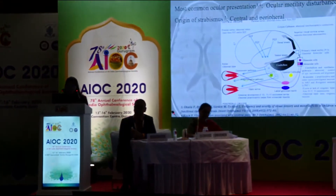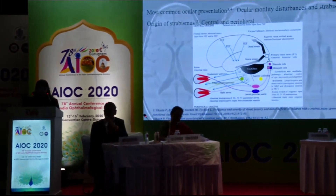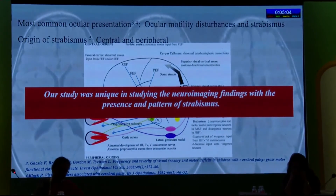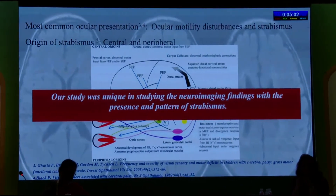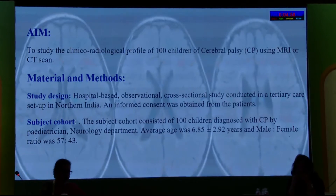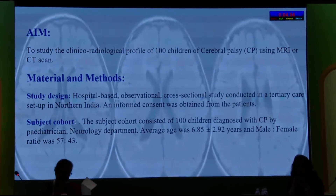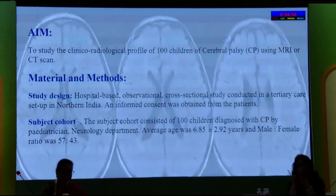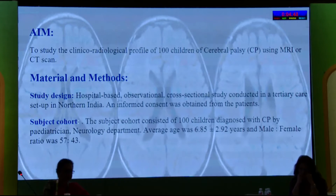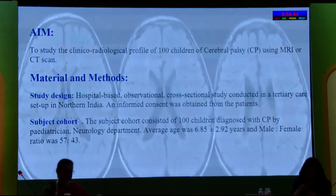There have been various described neuroimaging findings in CP, but our study was unique in studying the neuroimaging findings with the presence and pattern of strabismus. The aim was to study the clinical-radiological profile of 100 children with cerebral palsy using MRI or CT scan. It was a hospital-based observational cross-sectional study conducted in a tertiary care setup in northern India, consisting of 100 children diagnosed with CP by a pediatric neurology department. Average age was 5 to 9 years, with a male-to-female ratio of 57 to 43.